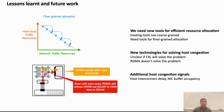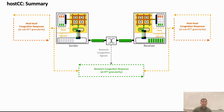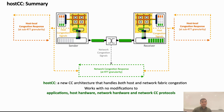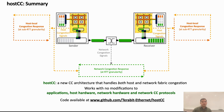To summarize, I talked about Host CC, a new CC architecture that handles both host and network fabric congestion using a sub-RTT host local congestion response along with an RTT-level network congestion response. We have realized Host CC within the Linux network stack without modifications to applications, host hardware, and network hardware. We have open-sourced Host CC code and required workloads to reproduce our results. Thank you.